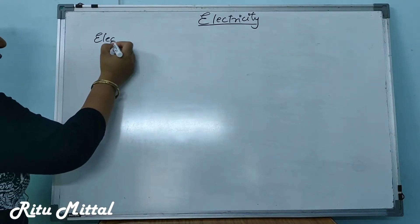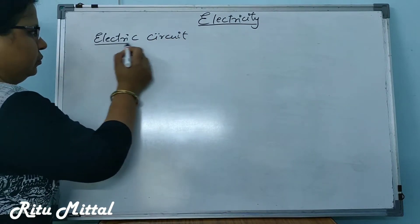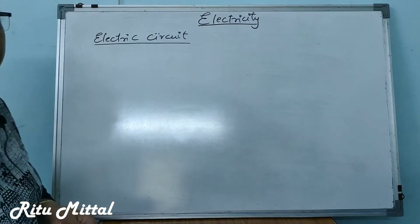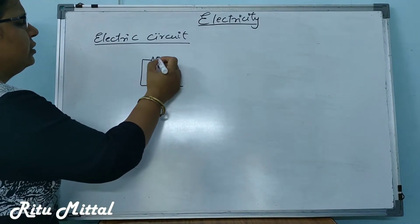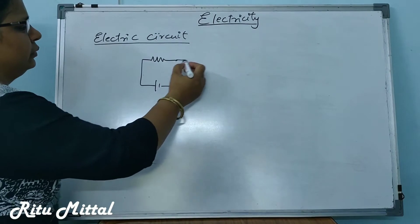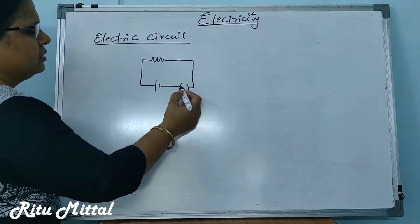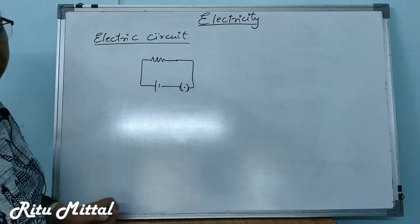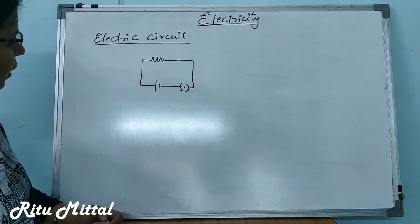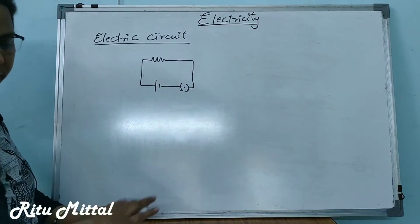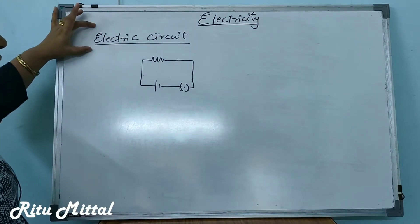First one — what is an electric circuit? You have a battery, a resistance, bulb, or load, and a switch. This is a symbol for a switch which you can close or open. An electric circuit is a closed path where the current can flow. It is a continuous and closed path of an electric current.